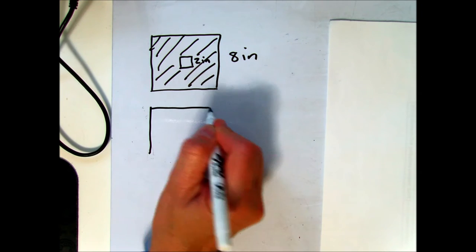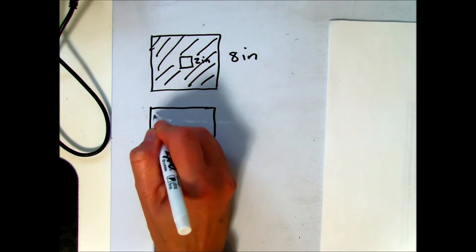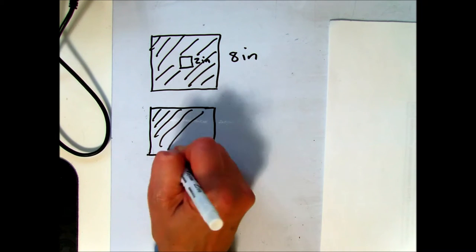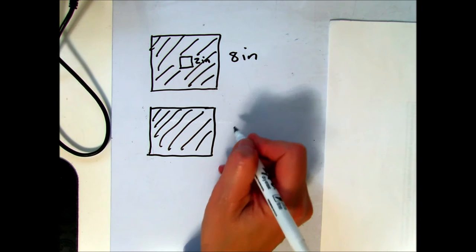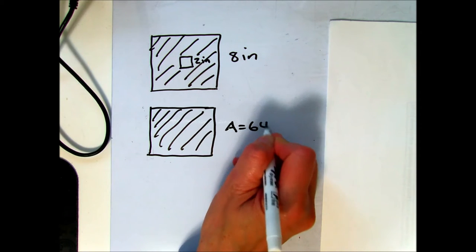If we know that the area of the square that's 8 inches on each side is 64 inches squared,